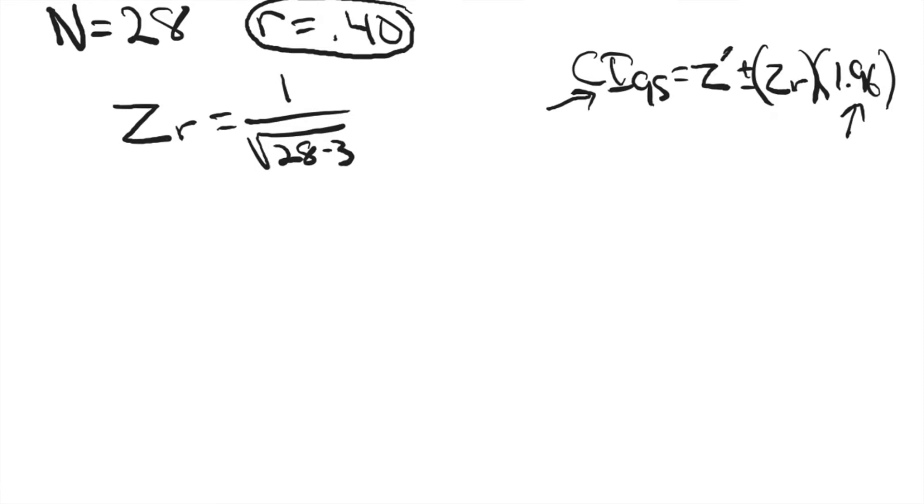I just happen to know that for a 95% confidence interval, the value from appendix A will be 1.96. I'm not going to look it up this time, but you can double check me if you'd like.